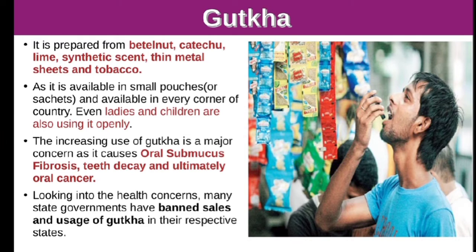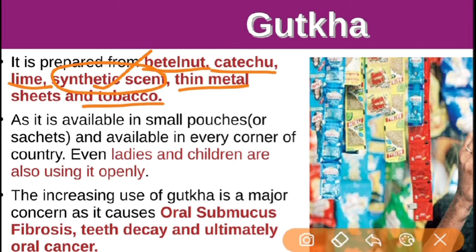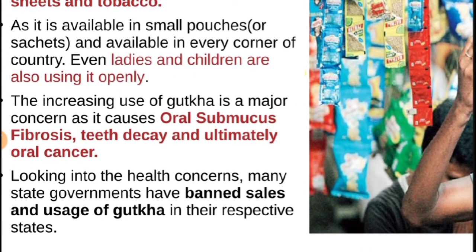One intoxicant used very widely in India is gutka. Gutka is prepared from betel nut (supari), katachu, katha, lime, and these are mixed with synthetic scent to make the mixture more appealing. Thin metal sheets are used, and tobacco is also added to produce stimulation. It is available in very small sachets or pouches which do not cost much and is readily available in every village and town, so even ladies and children have become addicted to it.